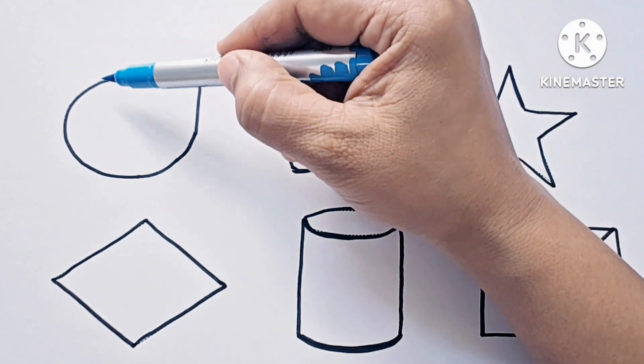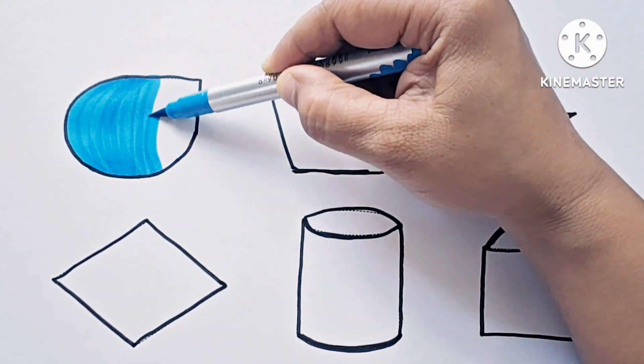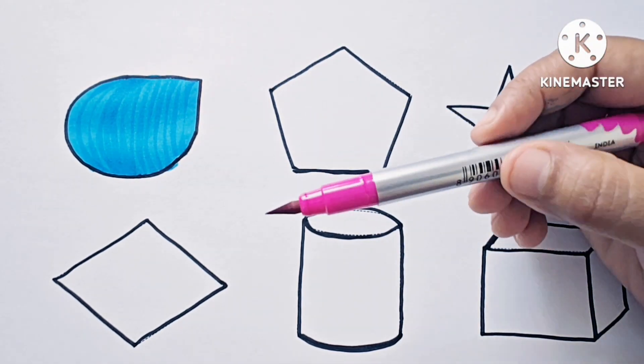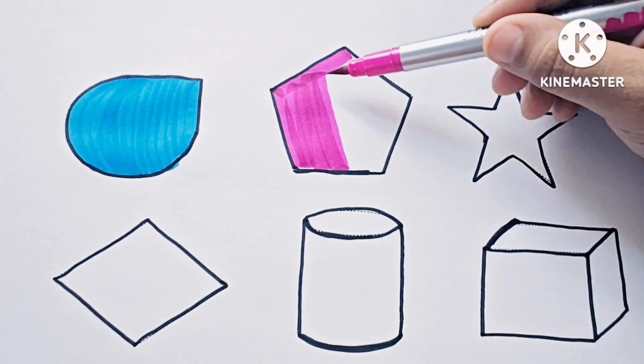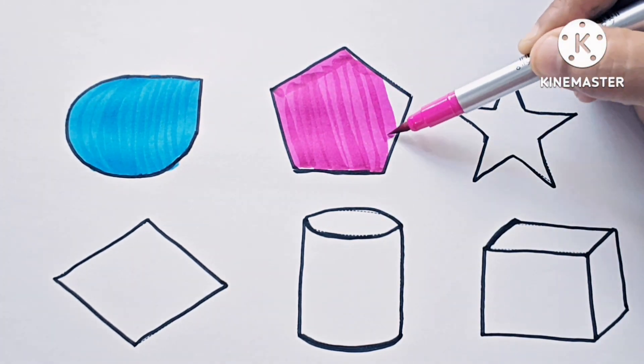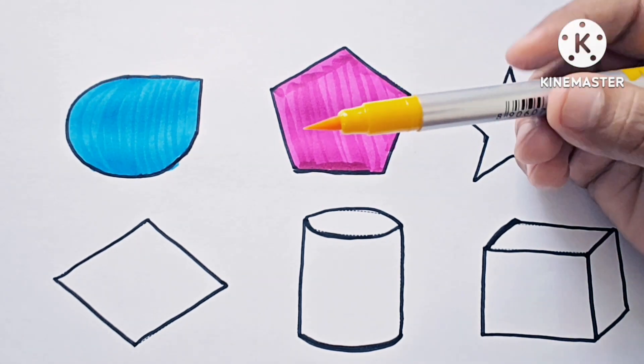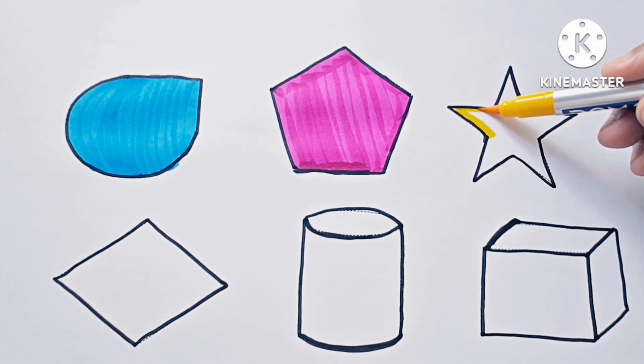This is pink color. This is yellow color. This shape is star. It has five points.